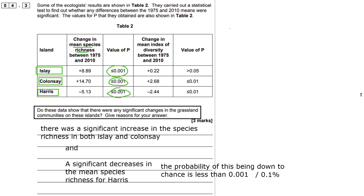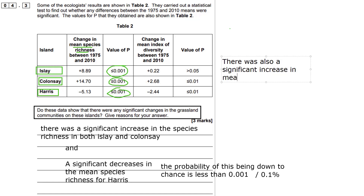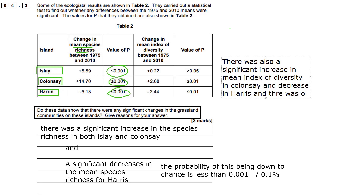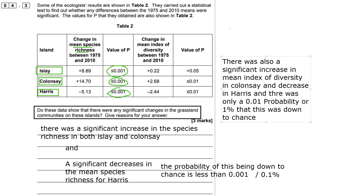That's why we do statistical tests and why we generate P values from them. Now looking at the mean index of diversity, which is the fourth column, there are two other significant results. In Colinsay there's been an increase of plus 2.68 and in Harris a decrease of 2.44. The P value arrows point to the left again, meaning less than 0.01 — so there is only a 1% probability that this change in the index was down to chance.